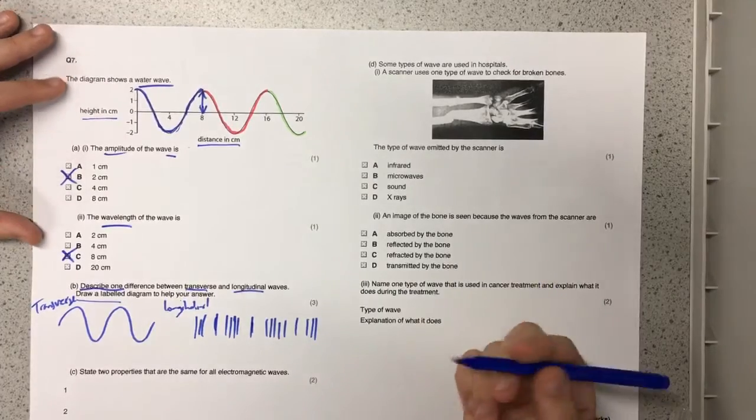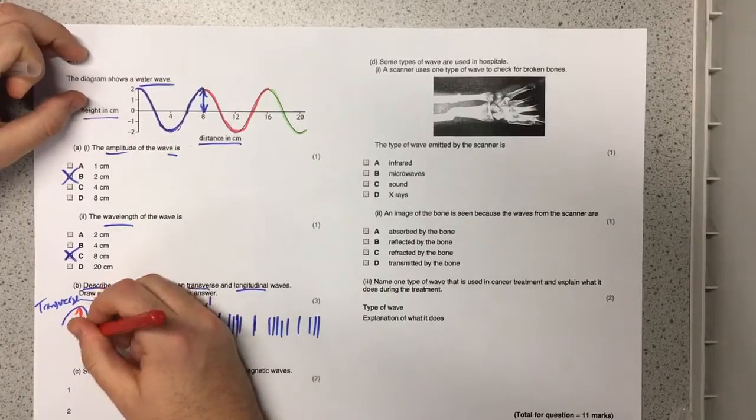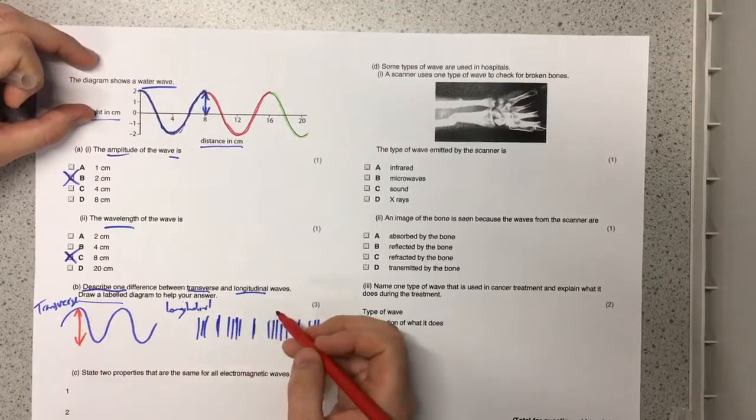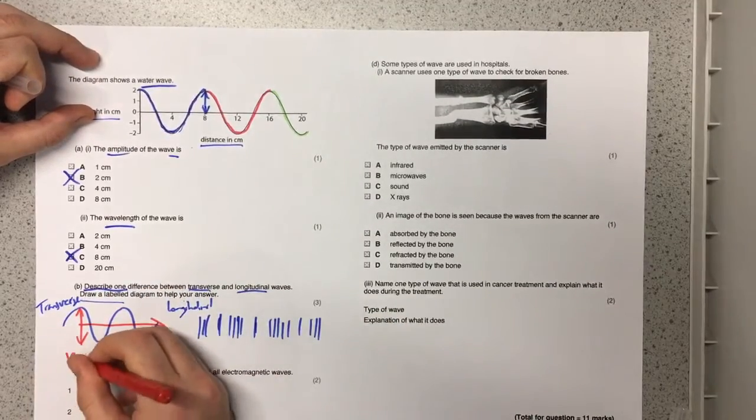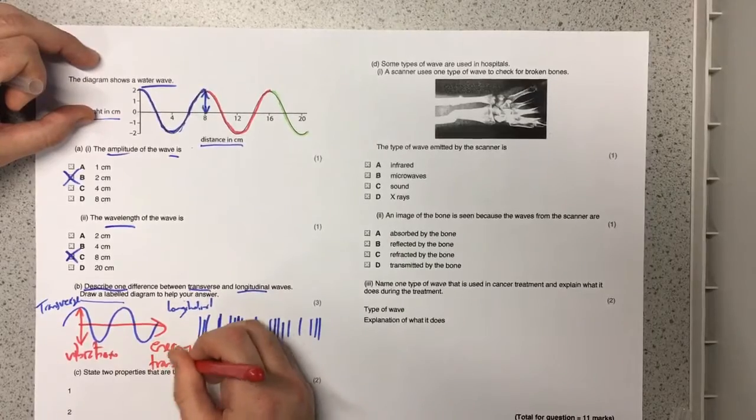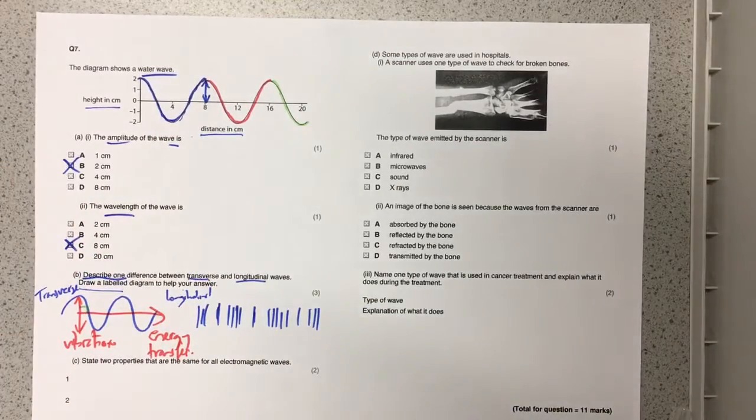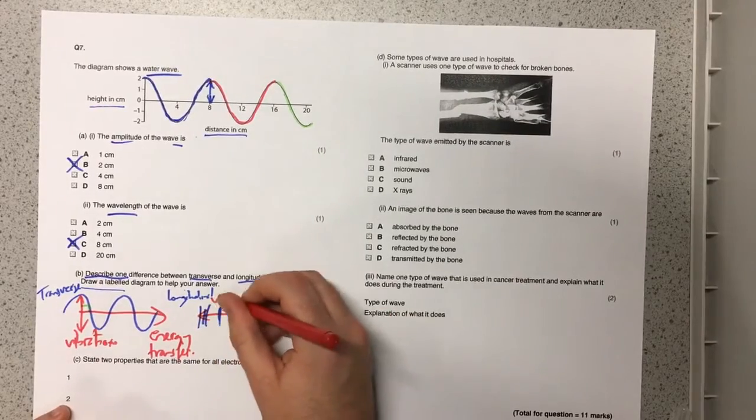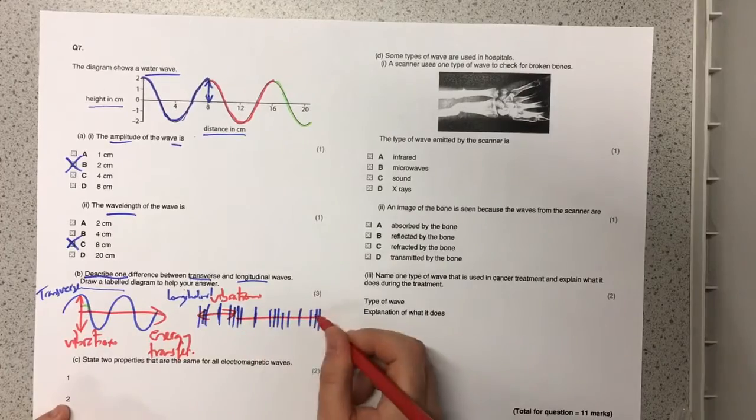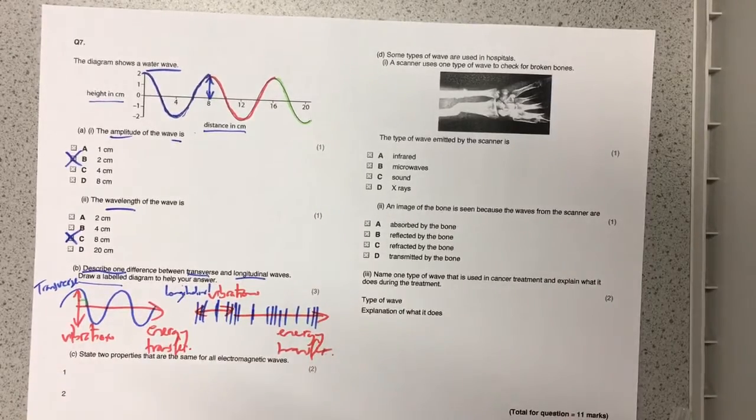Now we've got to identify a difference and the most important difference about transverse and longitudinal waves is that the vibrations for a transverse wave are perpendicular to the direction of energy transfer. So we can simply label the vibrations and then the energy transfer. And then just to really prove that point we can put in there that symbol for 90 degrees and then we've got the symbol showing that we've got vibrations at 90 degrees to the direction of energy transfer. And then we've got to do the same for the longitudinal waves. So here we've got the vibrations and they're going parallel to the direction of the energy transfer. And a simple labeled diagram like that can get you all three of the marks.